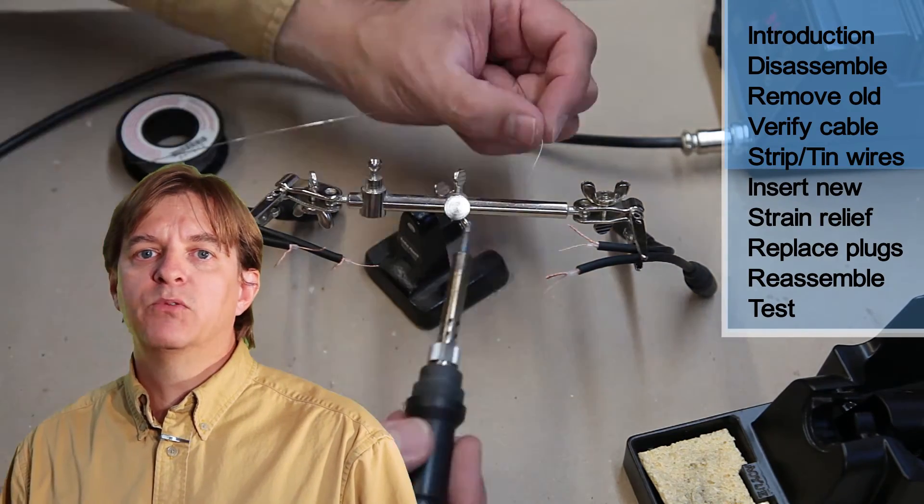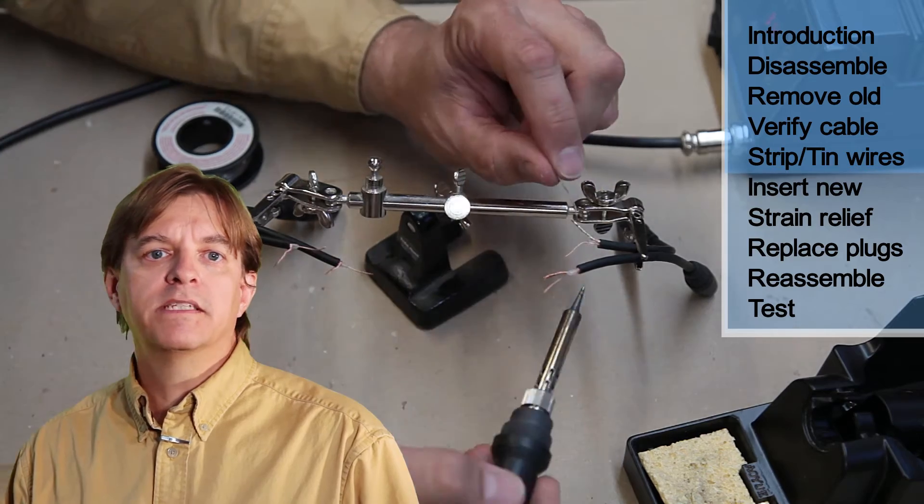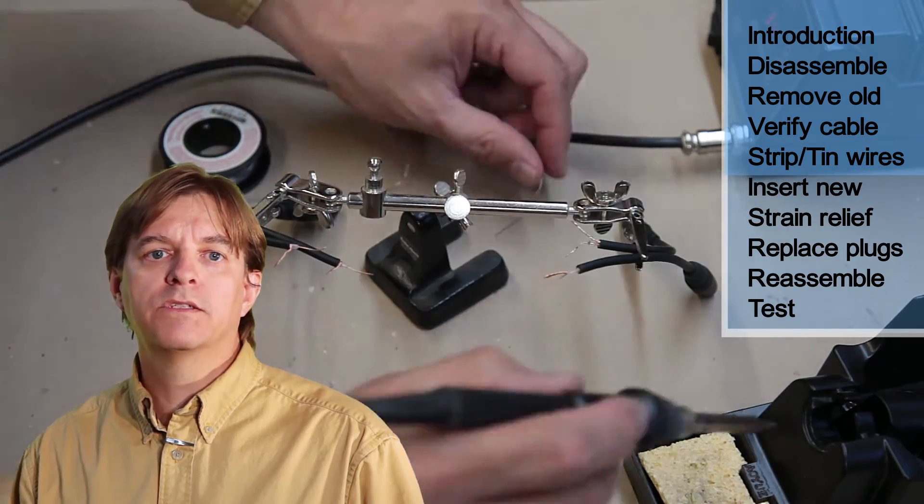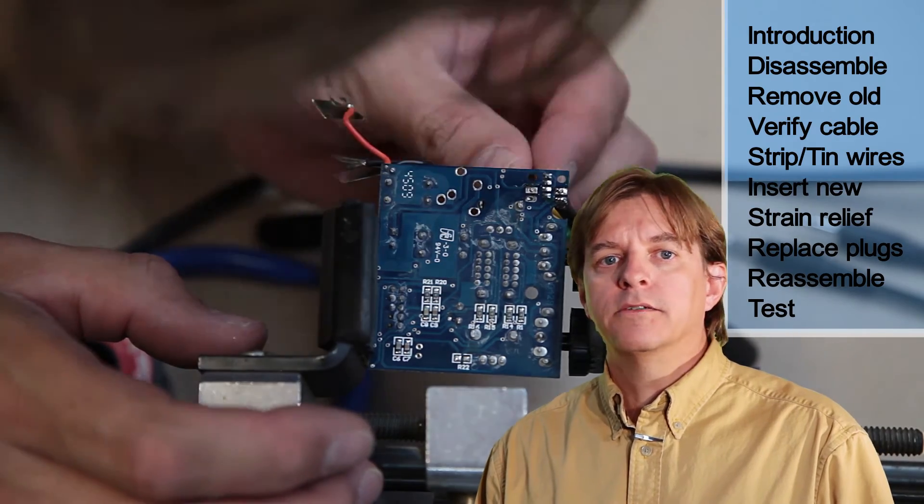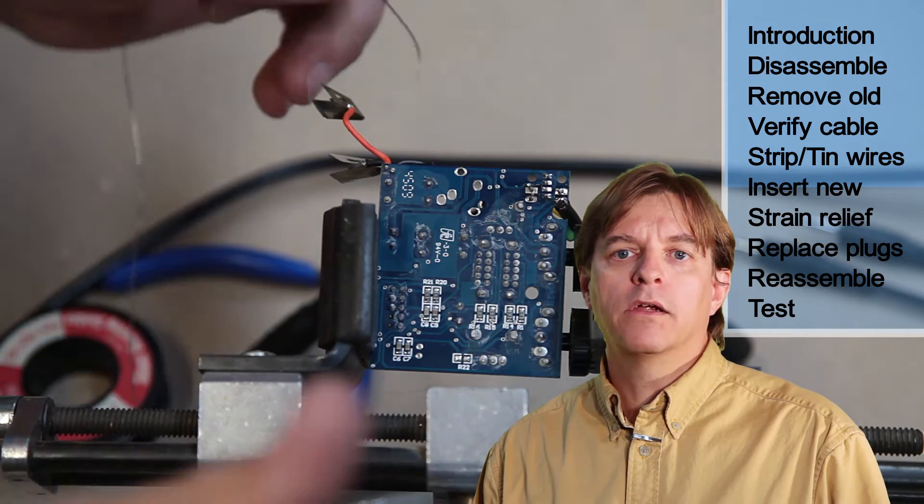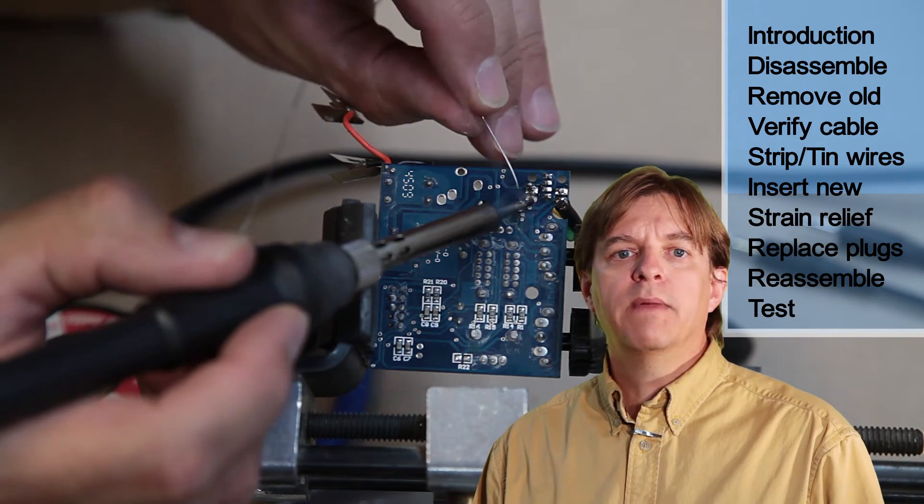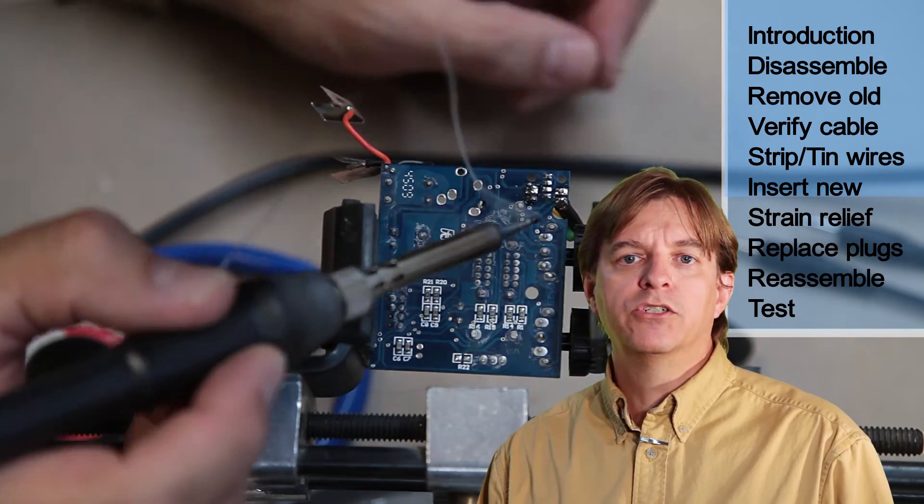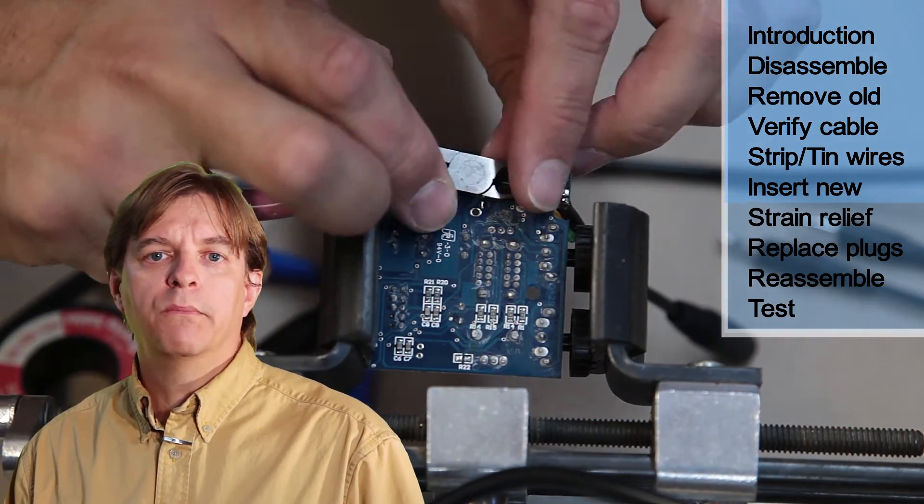With the connectors exposed and twisted together, now I'll tin the ends. This makes it much easier to solder when things are put together. Now the wires just go in the holes the old connectors came out of. For this particular application, it doesn't matter which wire goes in which hole. For other types of devices, the outside ring should match up to the outside ring of the original. A little solder finishes the connection and then the excess wire can be trimmed off.